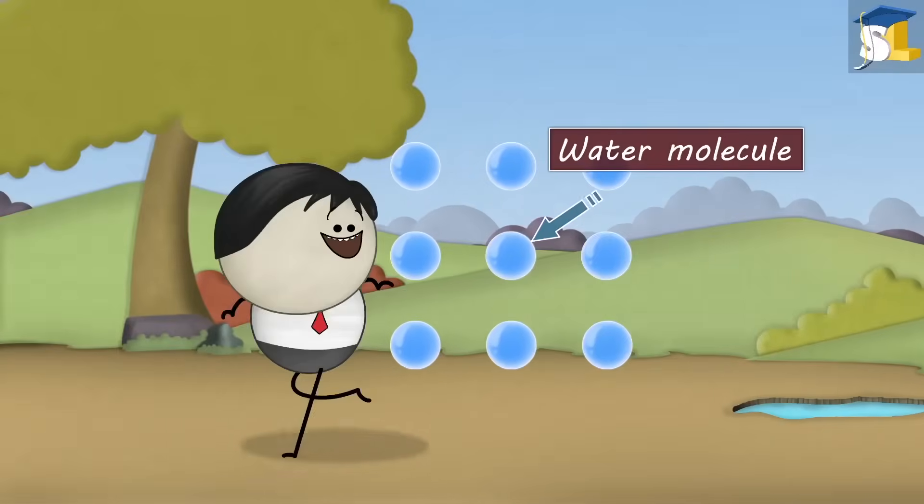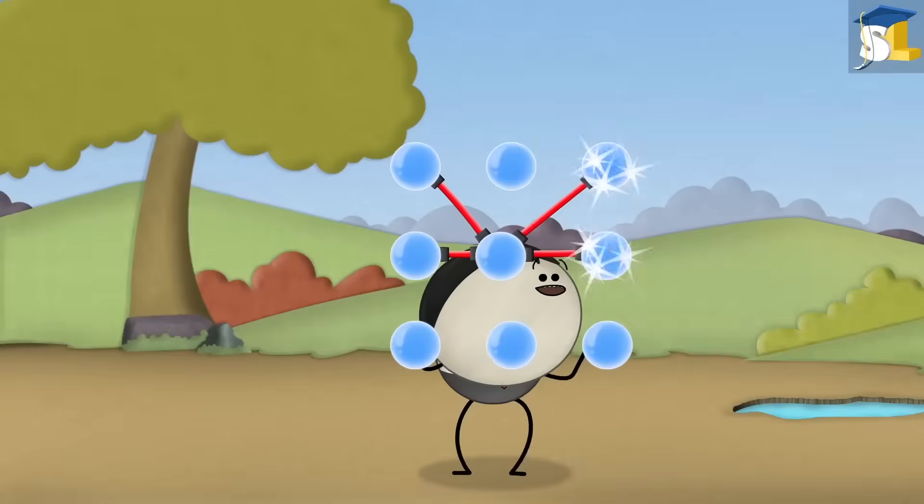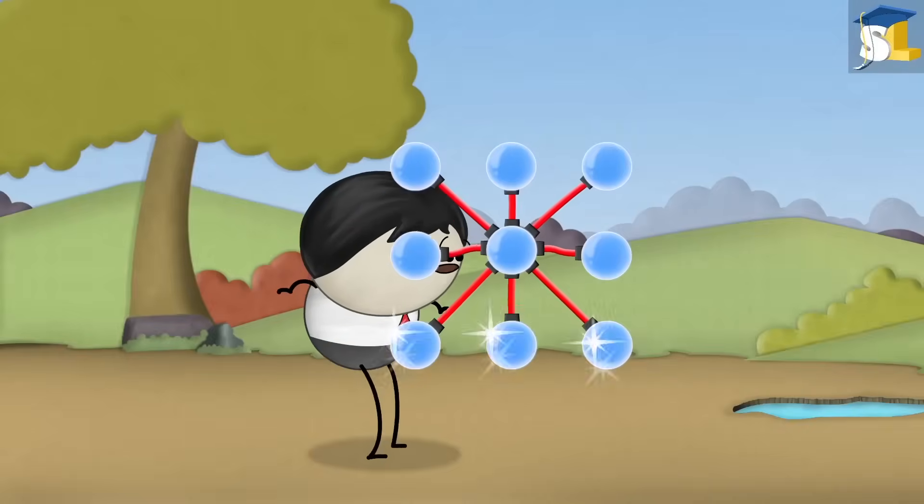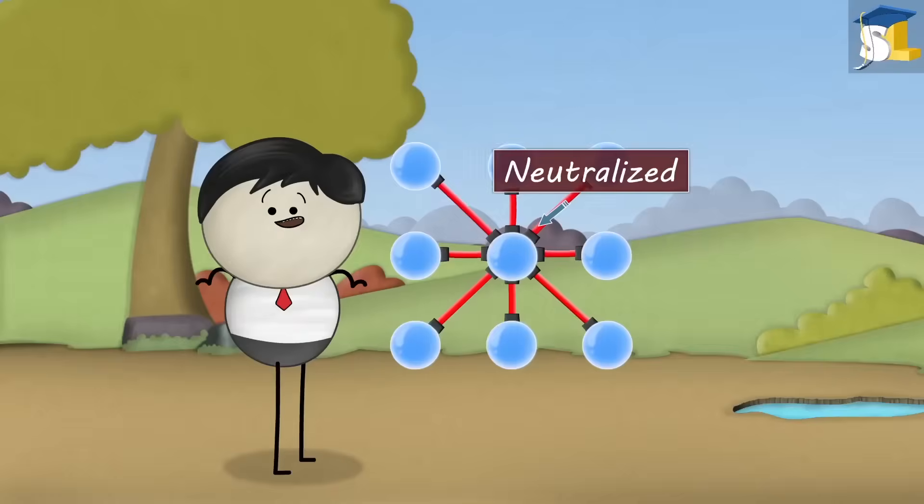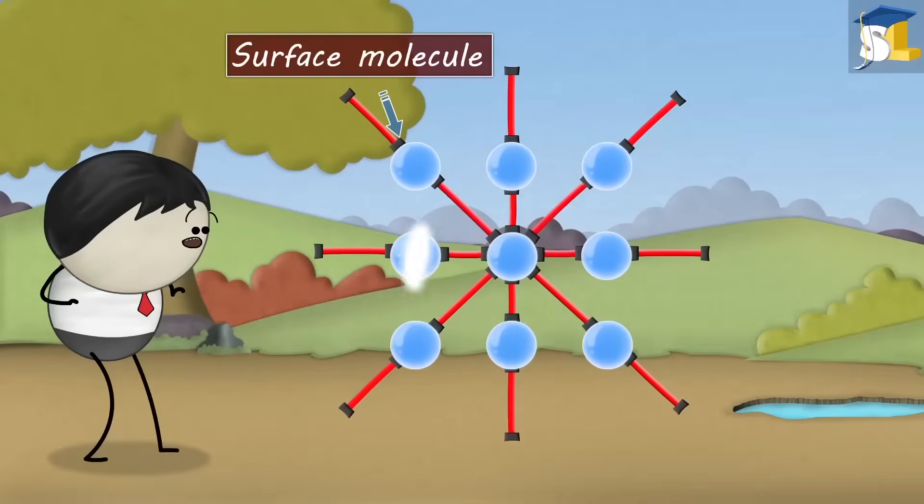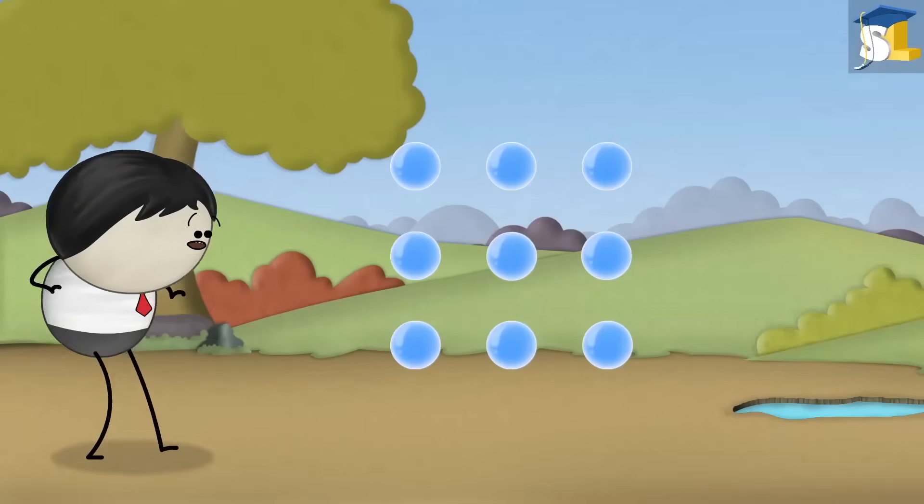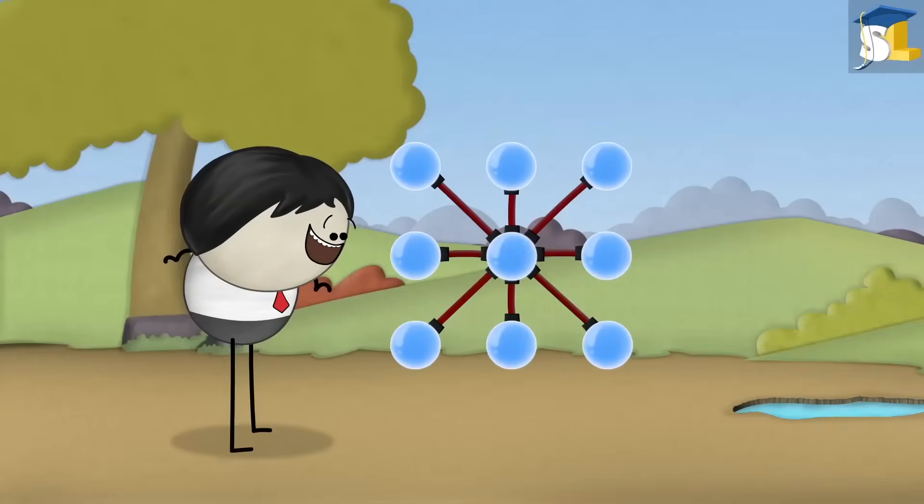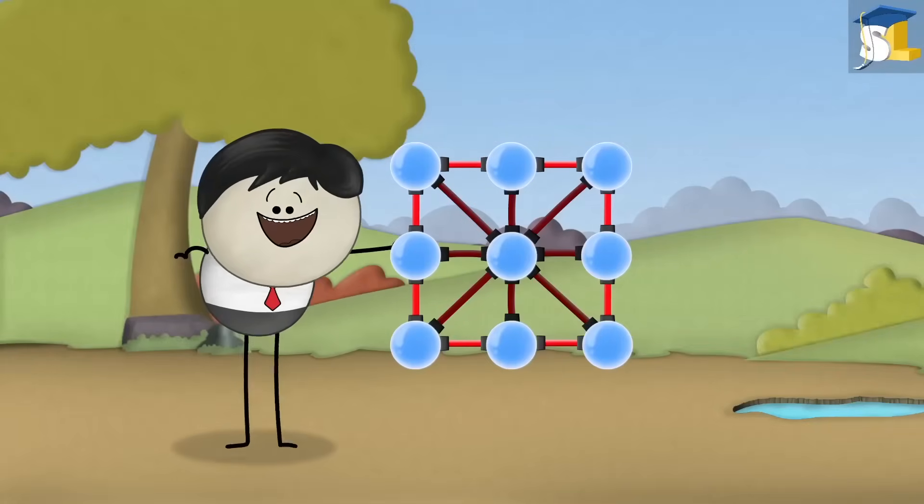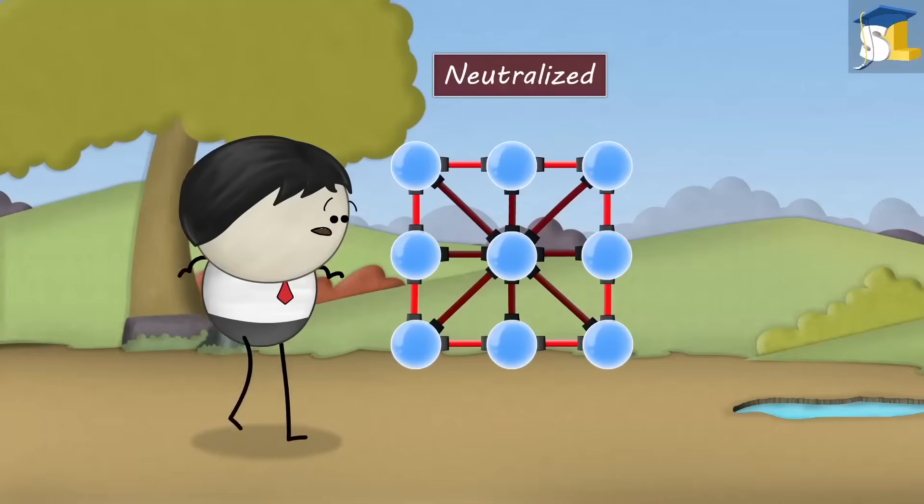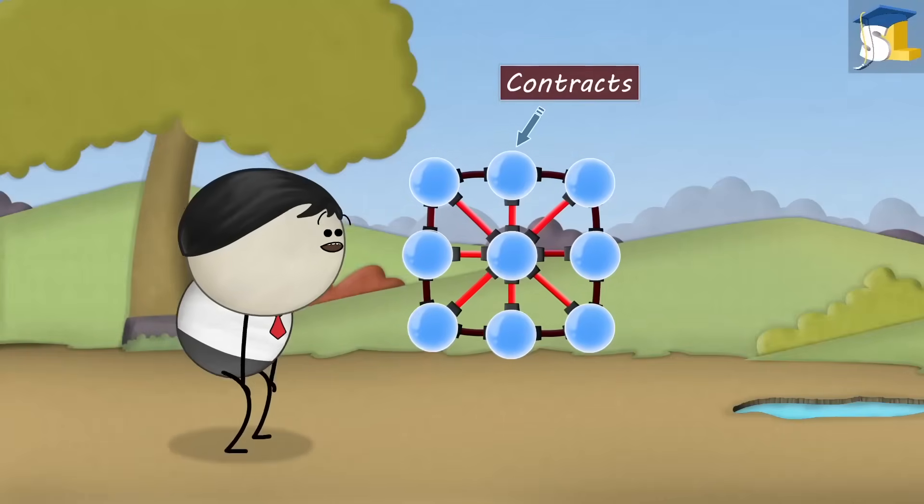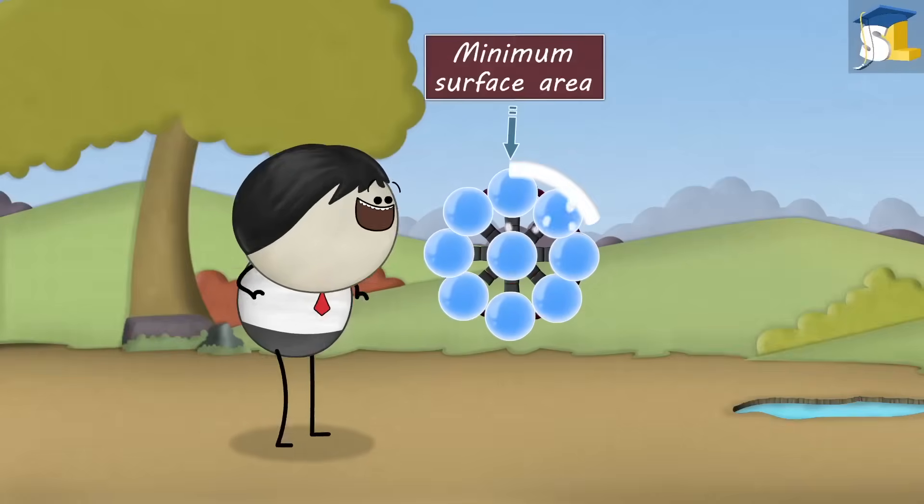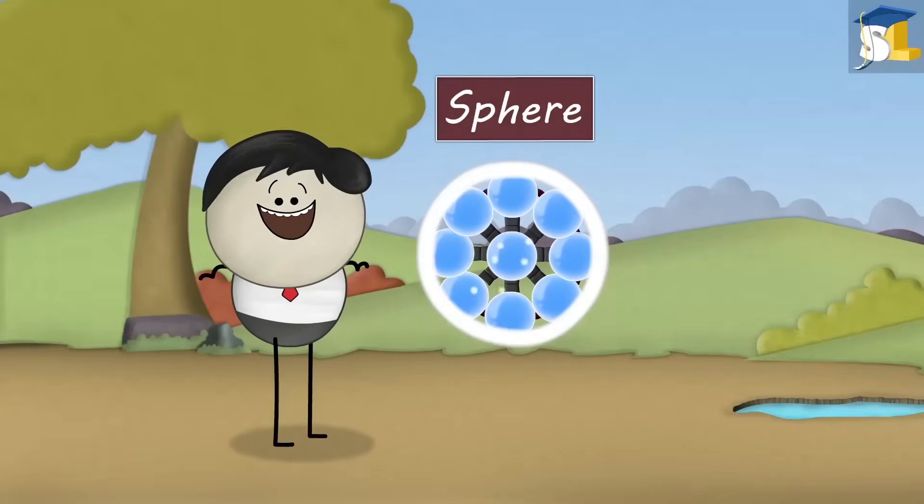Inside a drop, each water molecule is pulled with a force by its neighboring molecules. As these forces are equal and opposite, they get neutralized. However, the molecule present at the surface is not attracted outwards. It is attracted only inwards and sideways. Sideways forces get neutralized. But because of the inward force, each surface molecule contracts to form a shape that has minimum surface area which is a sphere.